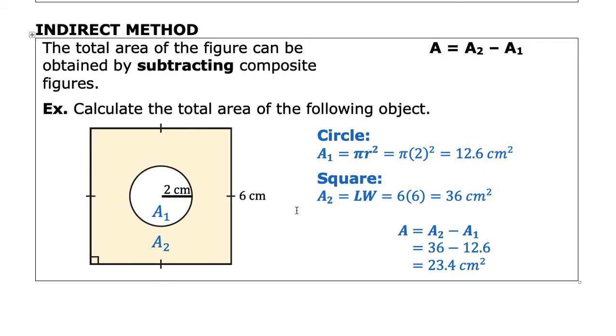The area of the square is length times width. So length times width or side squared is 6 times 6, which equals 36. So the difference between these two, again, the strategy overall is area is equal to area 2 minus area 1, the circle. And that difference is 23.4 centimeters squared.